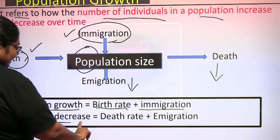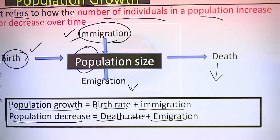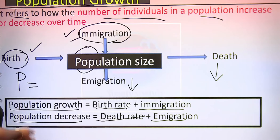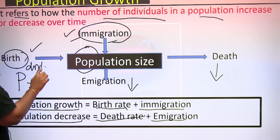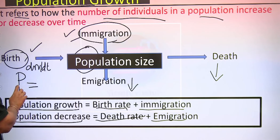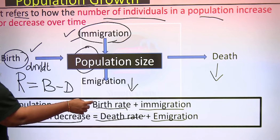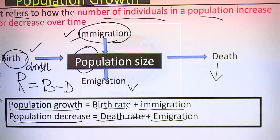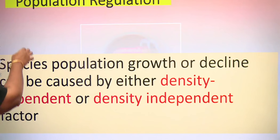So the two increasing factors are birth and immigration, and the two decreasing factors are death and emigration. The overall change in growth is represented as dN/dt. This can also be expressed by a term called r, the intrinsic growth rate, where r equals birth minus death — with birth including immigration and death including emigration.